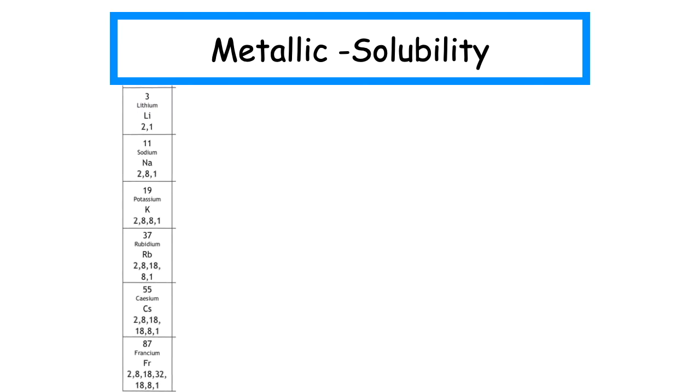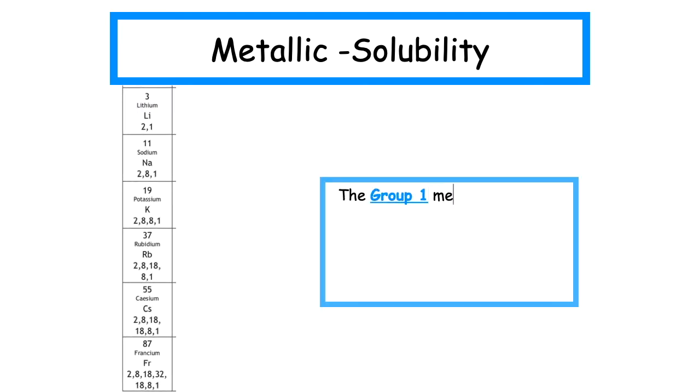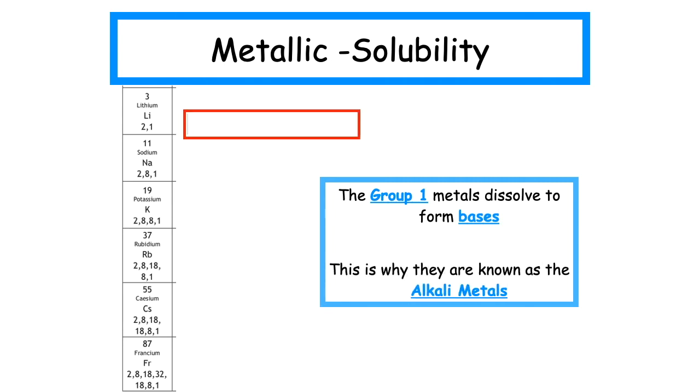The group 1 metals can dissolve in water to form bases. This is why they're known as the alkali metals. There will be a little bit more of this in Unit 3, when we focus on the metal topic, about which particular metals can dissolve in water, and what they actually form when they do.